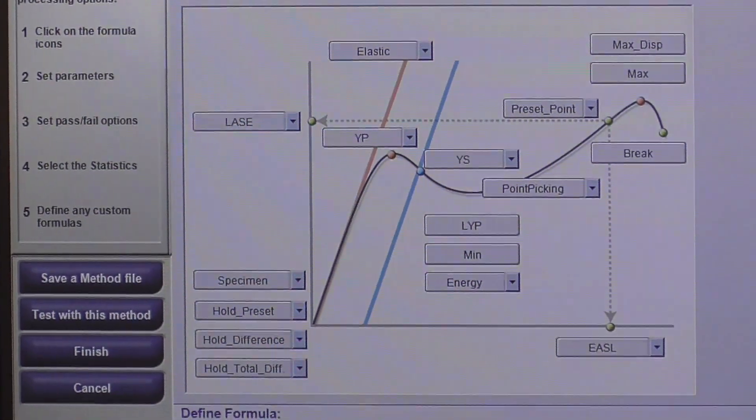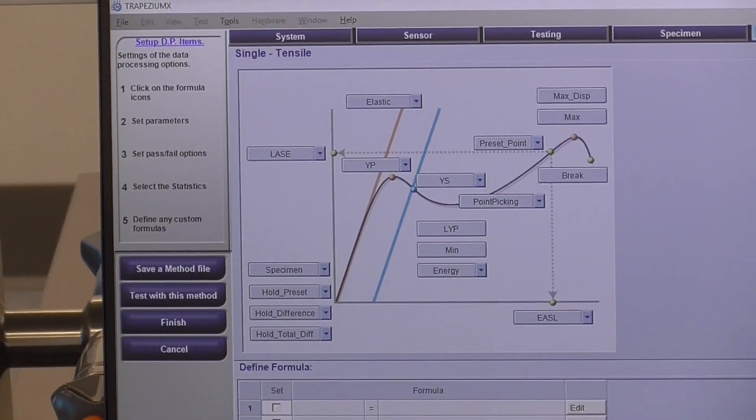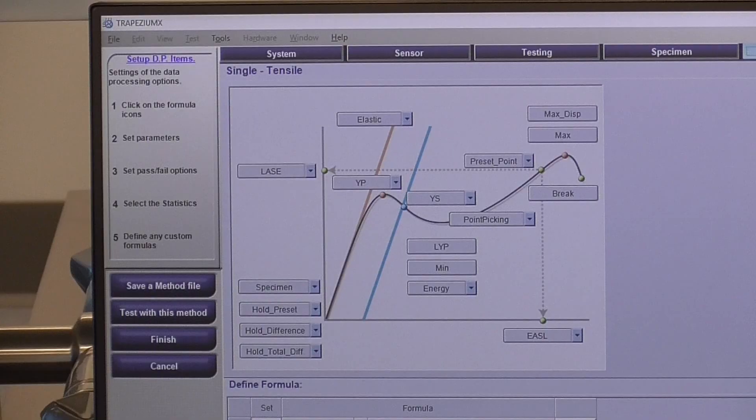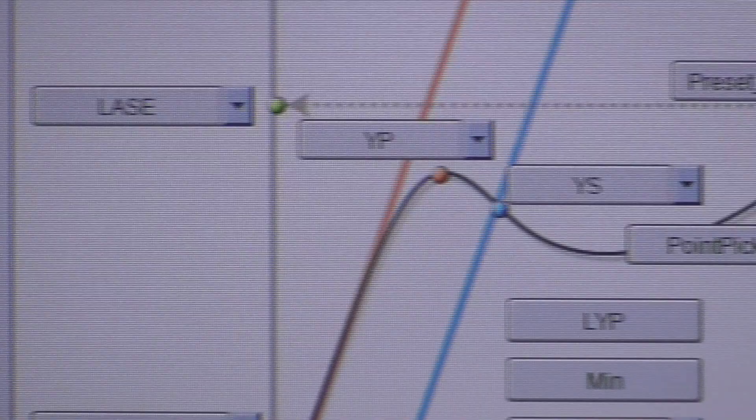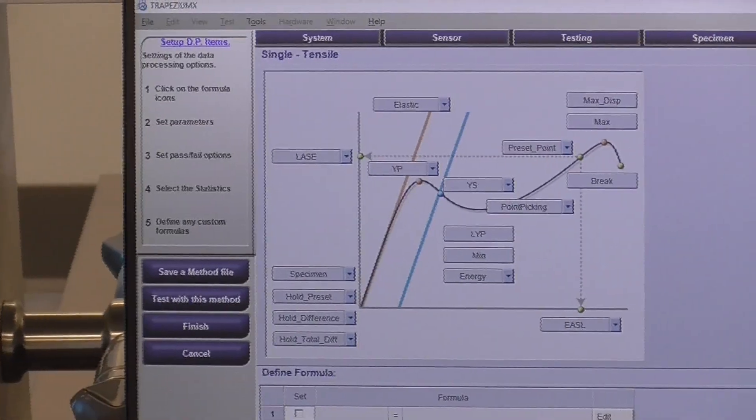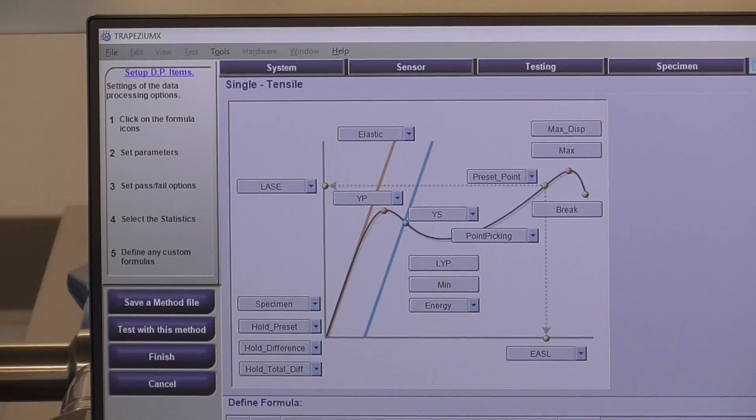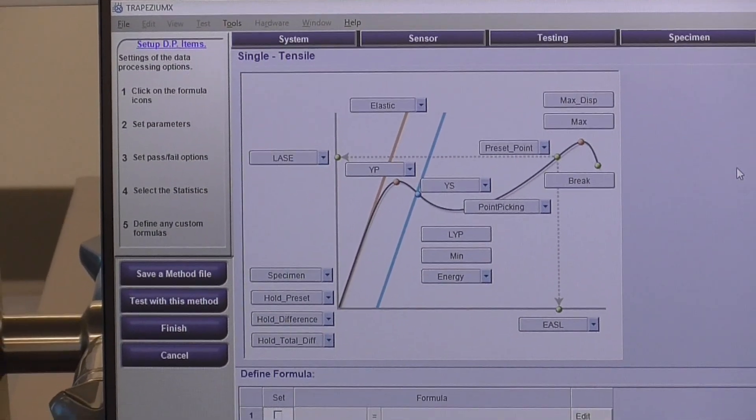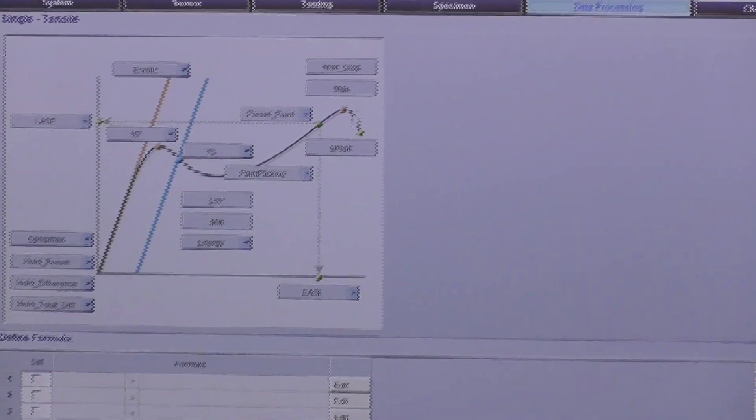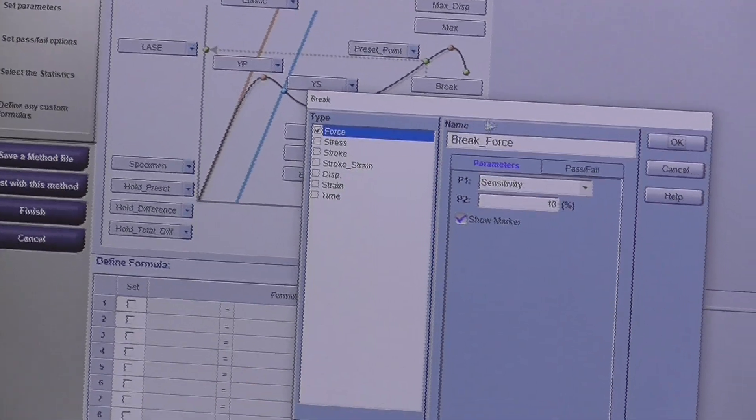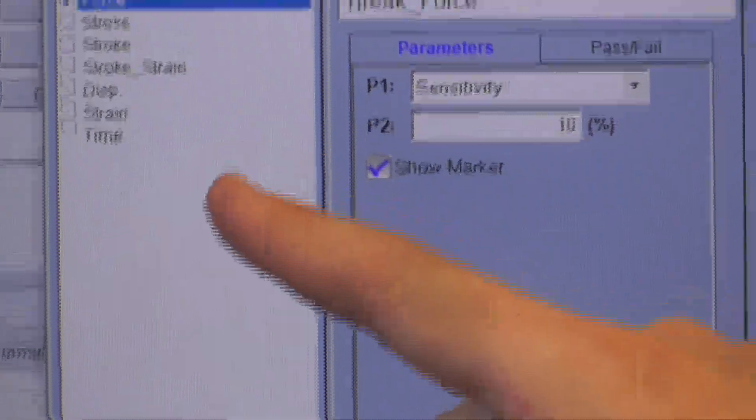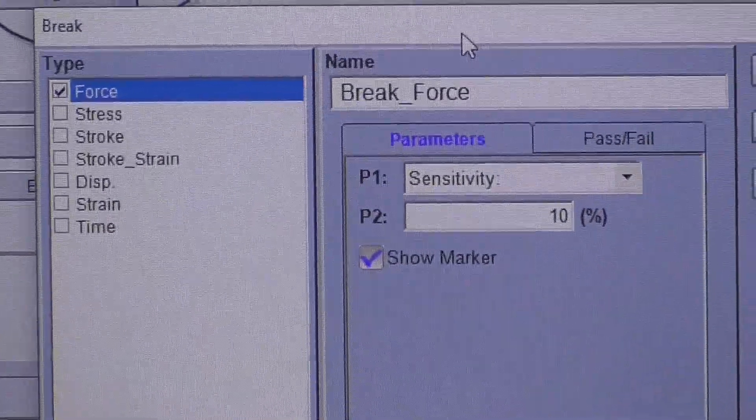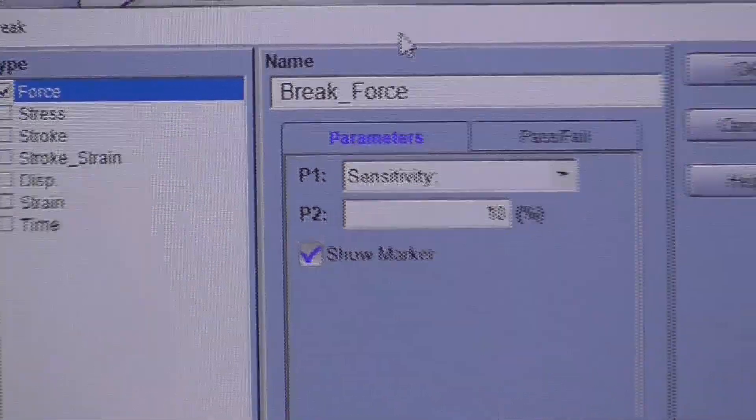Alright, data process. So here's where you actually pick the data points that you're pulling off the test as you're testing it. You can spend a lot of time in here. Similar to how you can pull up the help feature specific to the window that you're in, handy here is where you can pull up the help feature specific to the data processing parameter that you're in. So just for easiness sake, let's take break. So we'll click break. And right now it's selected at break force, but we can select any data processing parameter at that break point. So we can get break stress, break stroke, the displacement of break, things of that nature. And to select those, we just need to check these little check boxes.